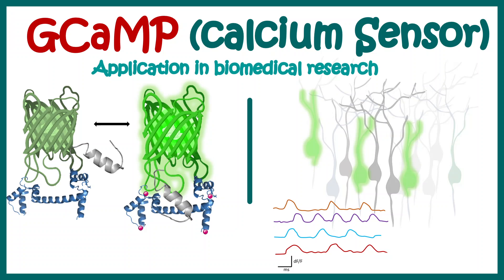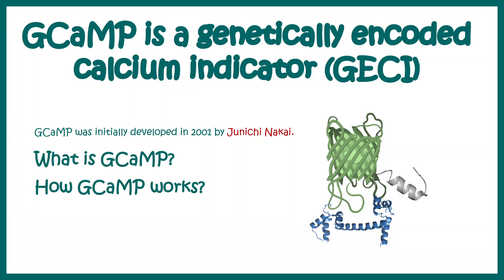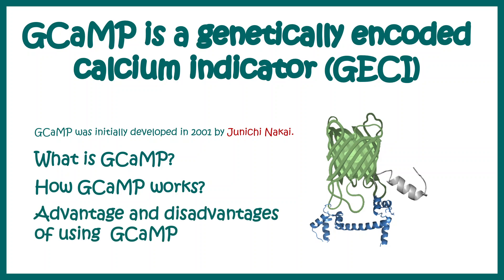In this video we'll talk about a genetically encoded calcium sensor known as GCaMP and its application in biomedical research. GCaMP was first reported in 2001 by Junishi Nakai. We'll cover what GCaMP is, how it works, and the advantages and disadvantages of using GCaMP in neurobiology research, which has really changed a lot since 2001.